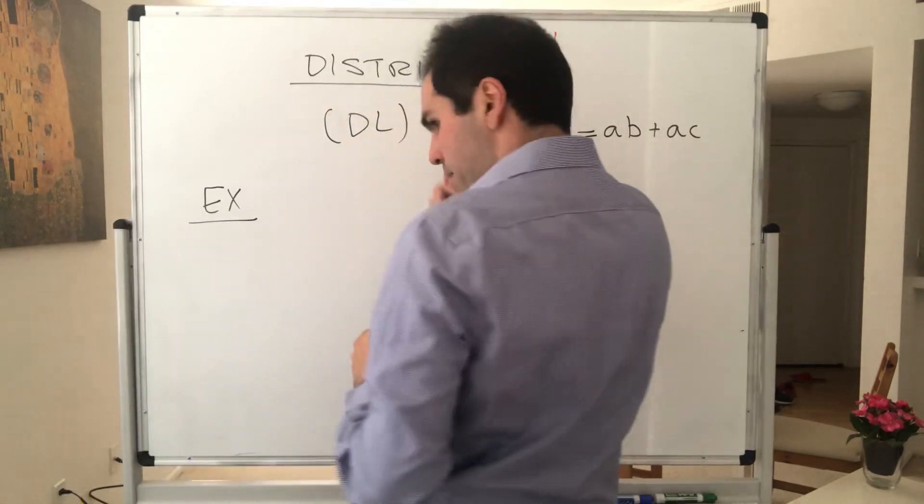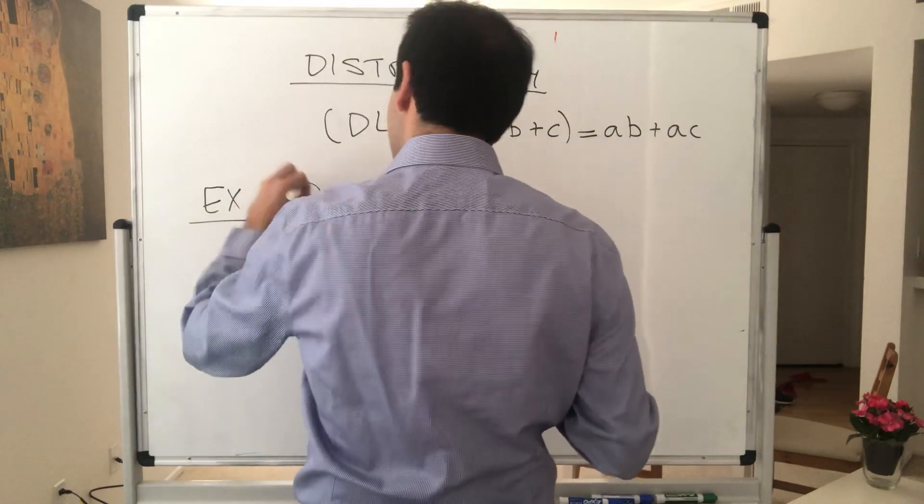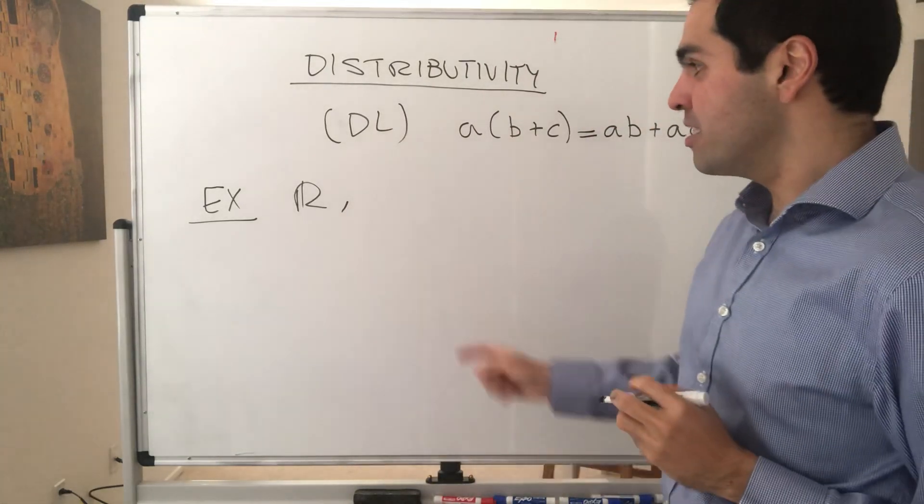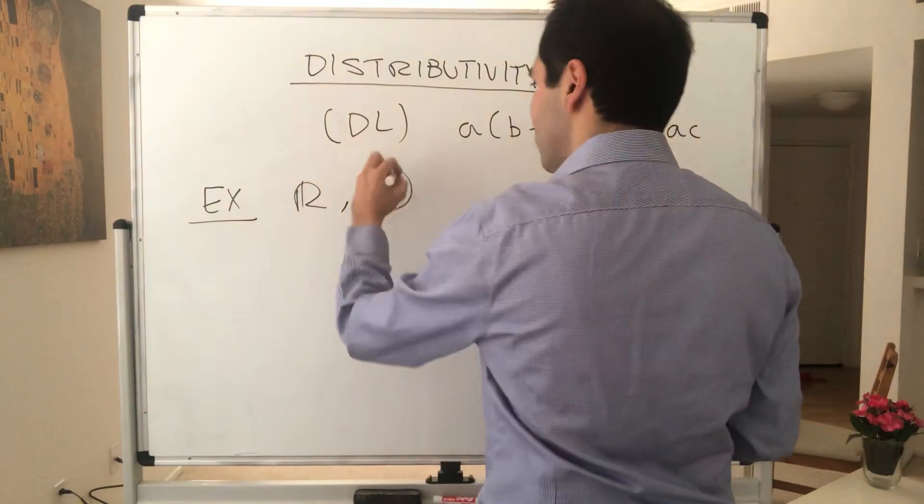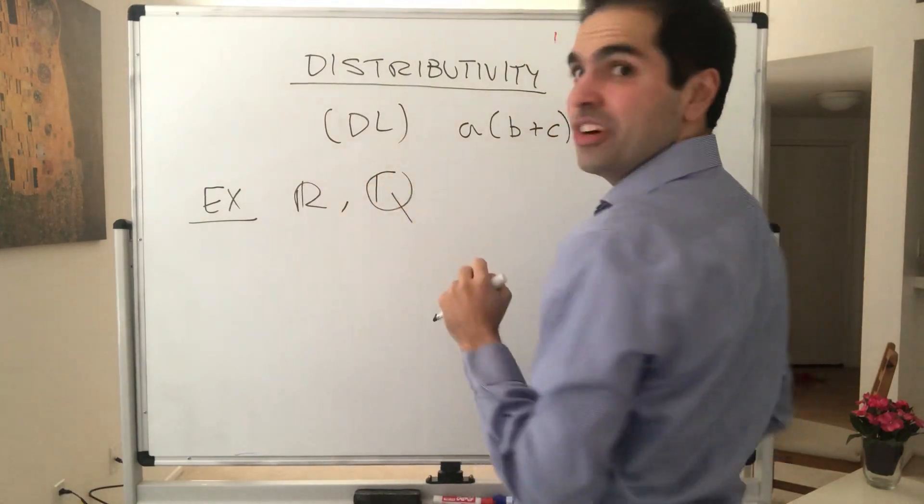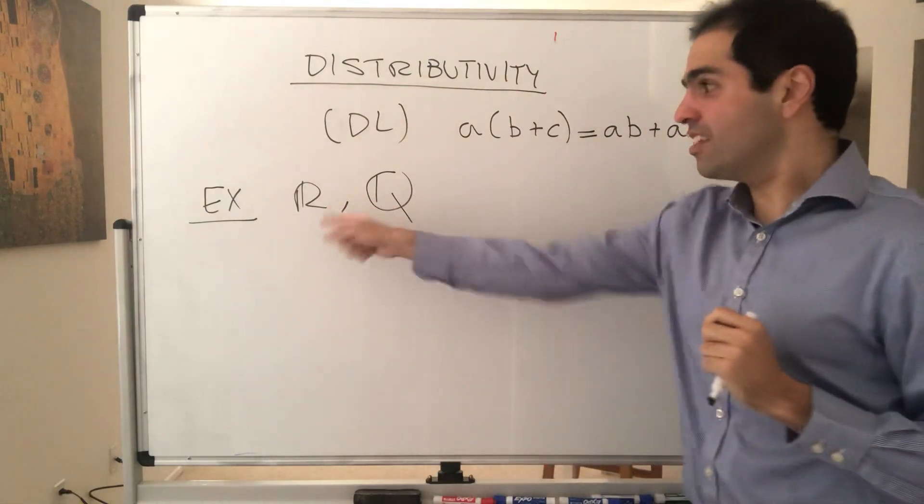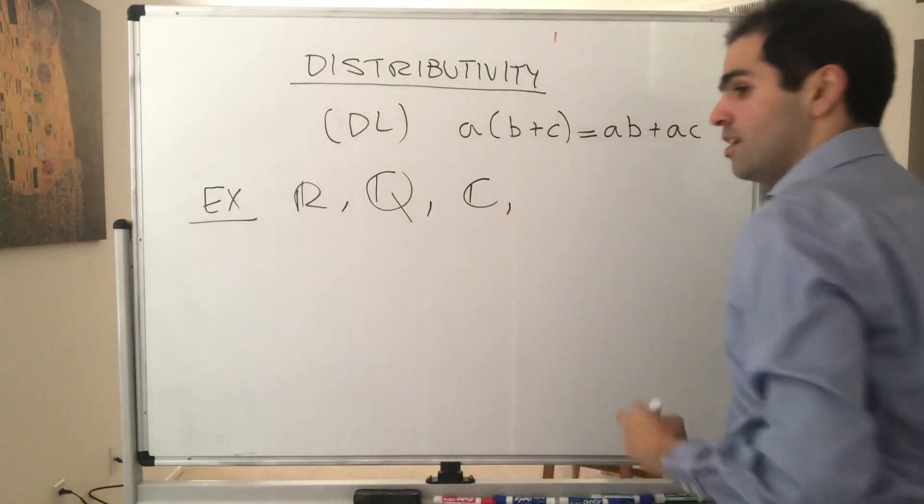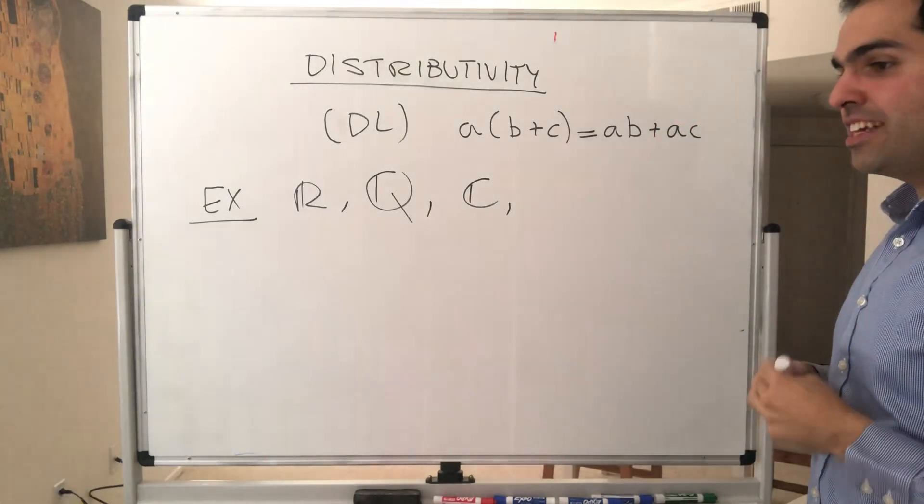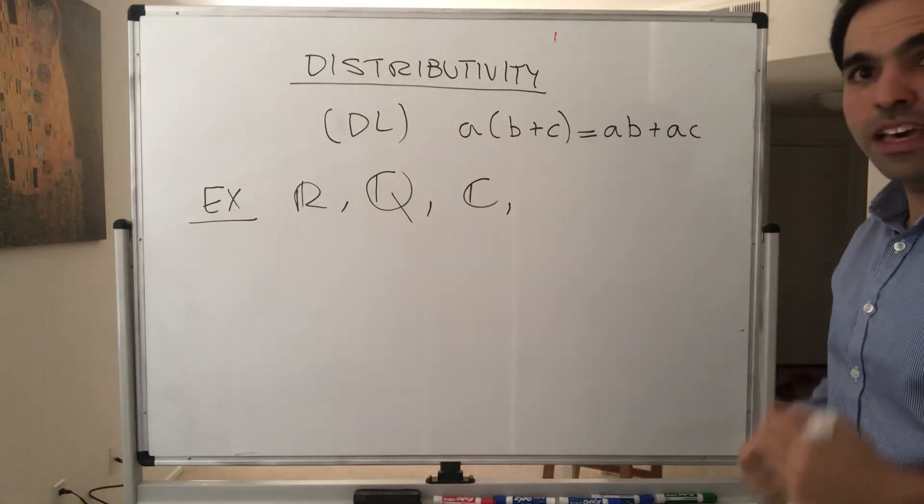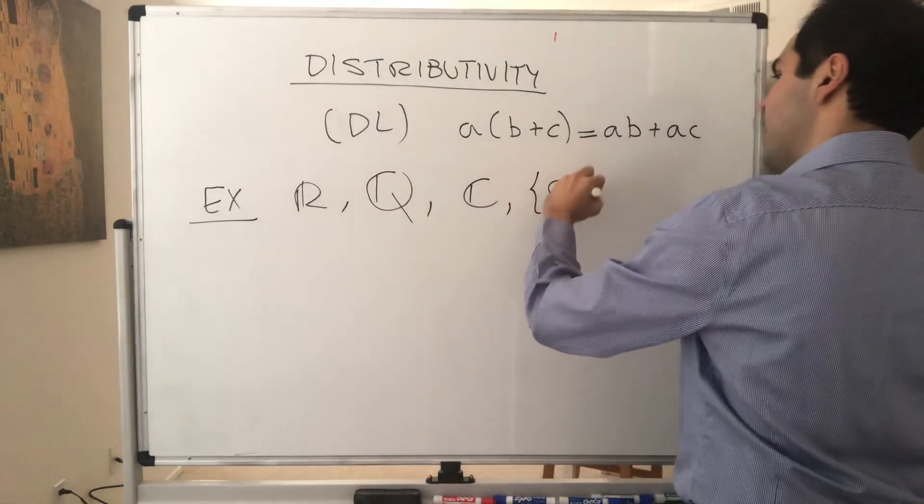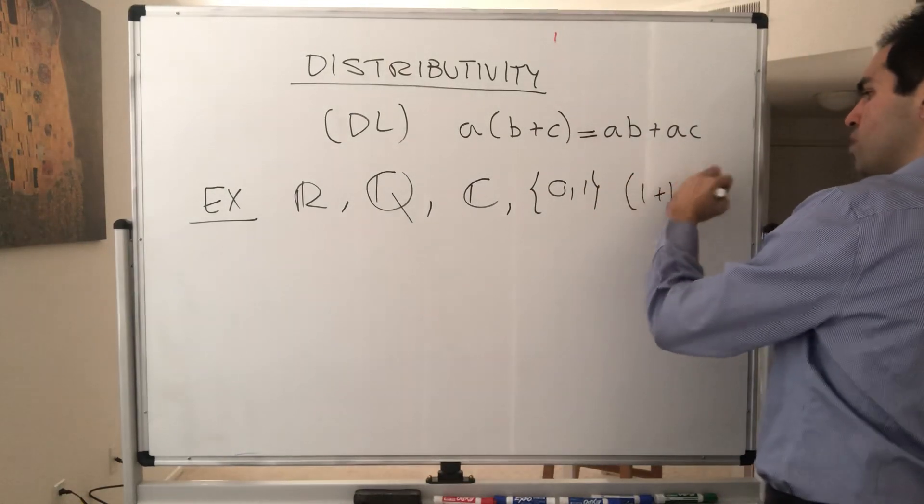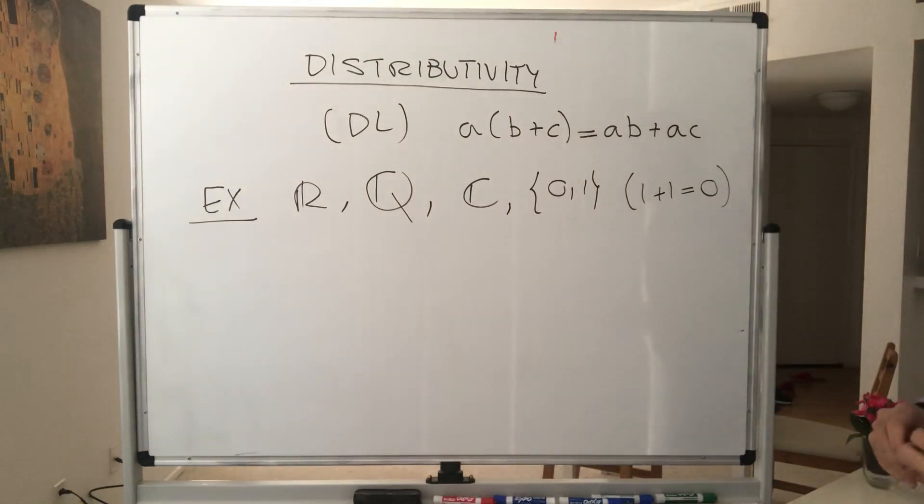And then the question is, well, what are examples of fields? Well, of course, the real numbers, because the point of today is the real numbers, but also the rational numbers. So unfortunately, rational numbers are also a field. So it's not what makes R special, but also the complex numbers. And lastly, you might think fields are very big, but they don't have to be. There's also just a set {0, 1}, that's a field, as long as you define 1 plus 1 equals 0. So it's a two element field.